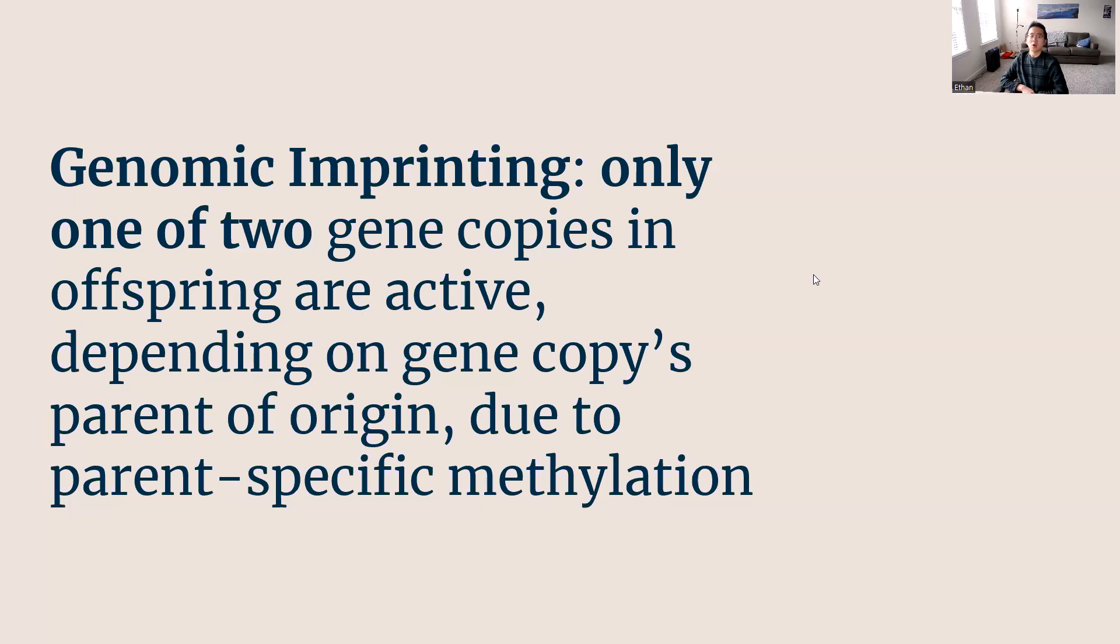What is genomic imprinting? It's a concept, an idea that involves the fact that for certain genes, only one of the two copies of that gene in an offspring are active. And the reason, the rationale behind which one is active depends on the gene copy's parent of origin due to parent-specific methylation. So recall, in basic Mendelian inheritance, which applies to a lot of our genes, a lot of our chromosomes, we get one copy from both of our parents, one allele from both of our parents. In this genomic imprinting situation, only one of those copies is active, depending on the parent of origin, due to this epigenetic mechanism, which is methylation that occurs during gametogenesis of each respective parent. I know, that's a lot of words. Let's see some poorly drawn pictures to try to elucidate this a little bit better.